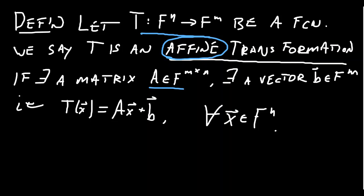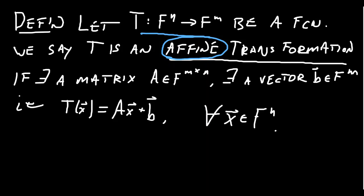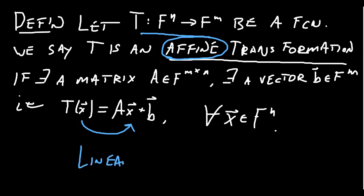If there exists an m by n matrix A and a vector B which lives in Fm — the codomain of this map — such that the function Tx maps you to the vector Ax plus B, then T is an affine transformation. x is a vector in Fn; multiplication by A goes from Fn to Fm, and then you add a vector from Fm to get Ax plus B. We've seen that linear maps send x to Ax, where A is the standard matrix. Affine transformations do the same thing but add this extra translation vector B.